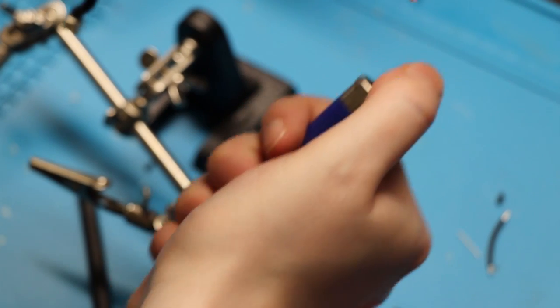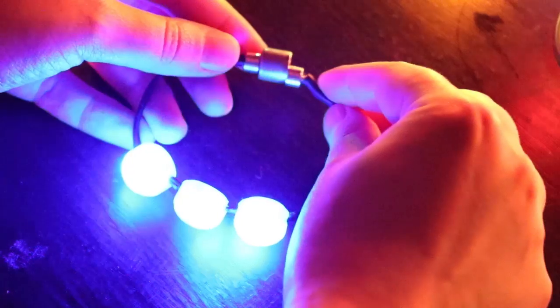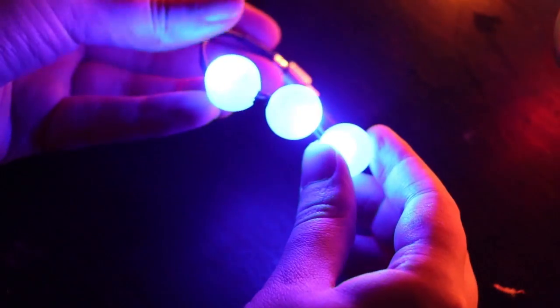Once you're done, seal your heat shrink, put your battery in the middle, and take it for a spin. You might have to switch it around to get the positive end to the right end, but once you do, it should light up.